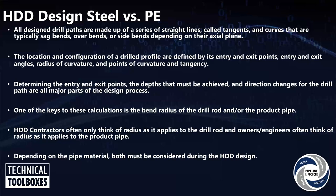One of the big things that drives the design is bend radius — how tight we can bend that pipe within a given hole. If I'm dealing with steel product pipe, usually the product pipe itself dictates the bend radius. If I'm dealing with polyethylene pipe, normally it's the steel drill rod that dictates the radius in that hole. There are exceptions — downhole tooling, mud motors, wireline steering tools — different things can affect that radius. But you've got to take all this into account.